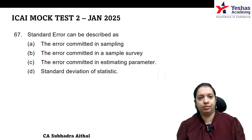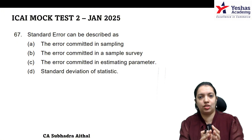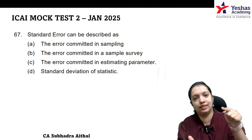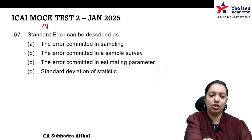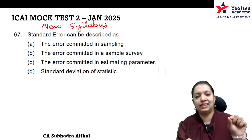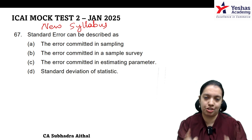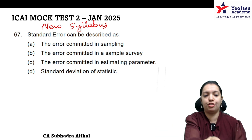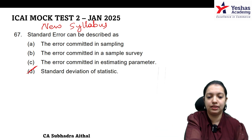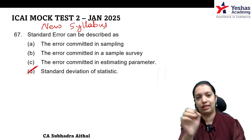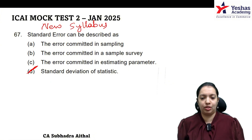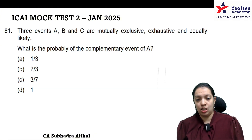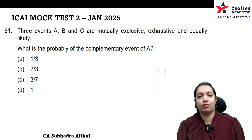Question number 67 is not asked in previous examinations because it is from the new syllabus — a question from the sampling theorem. Standard error is described as: standard deviation is for the population, while standard error is essentially the standard deviation for the sample or the statistic.